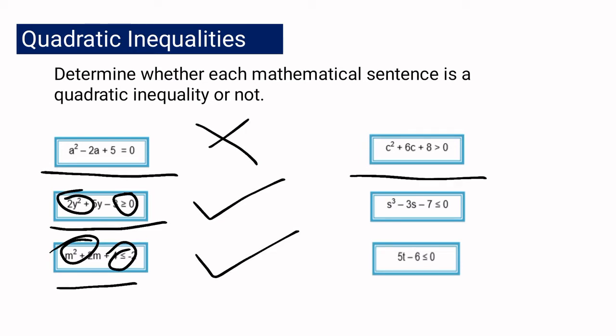Number four: c squared plus 6c plus 6c plus 8 is greater than 0. Yes, it is a quadratic inequality. Number five: s cubed minus 3s minus 7 is less than or equal to 0. This one is not a quadratic inequality. Even though it uses an inequality symbol, this is in the third degree because the highest exponent is 3, so it is not a quadratic inequality.